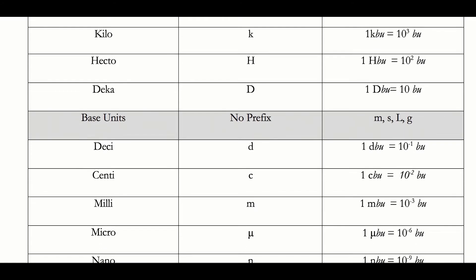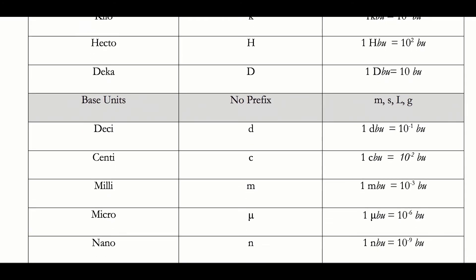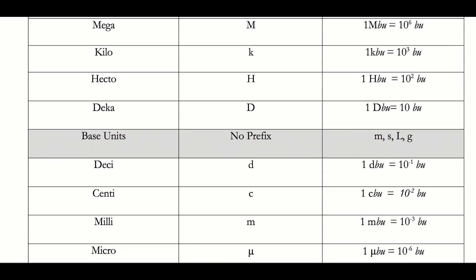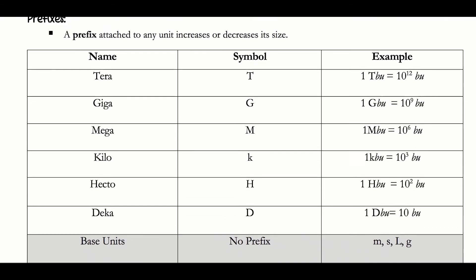Another prefix you might be familiar with: milli. One millimeter equals 10 to the negative third meters, or one milliliter equals 10 to the negative third liters. The base unit can be meters, seconds, liters, or grams — the value of the prefix and what it does to the unit is the same. Putting milli in front makes it a thousandfold smaller: 10 to the negative third.